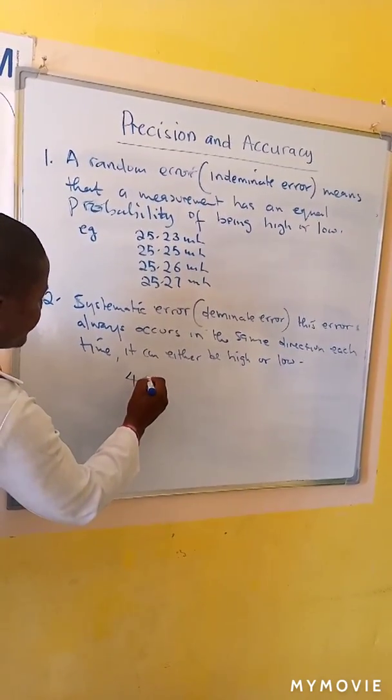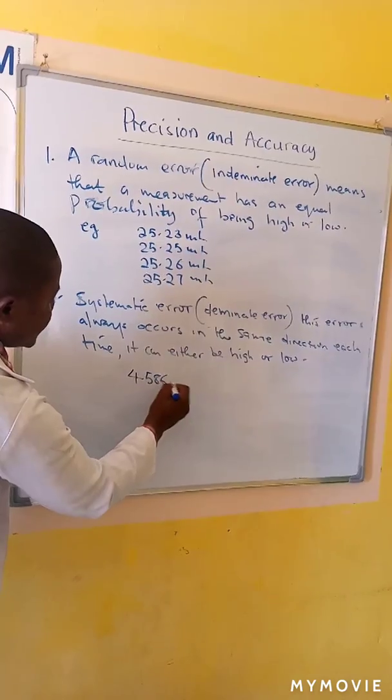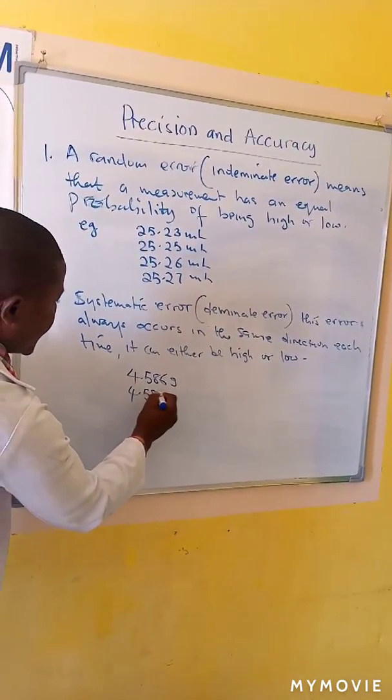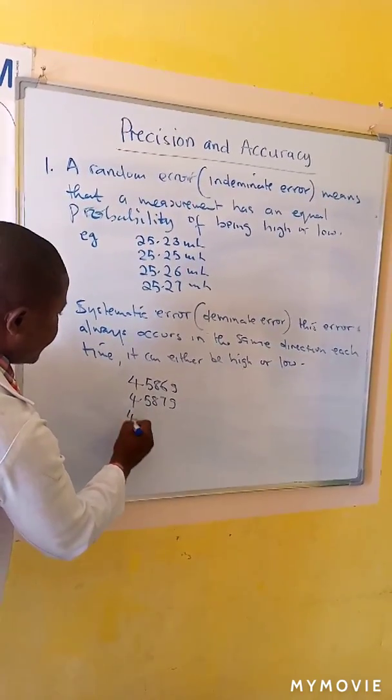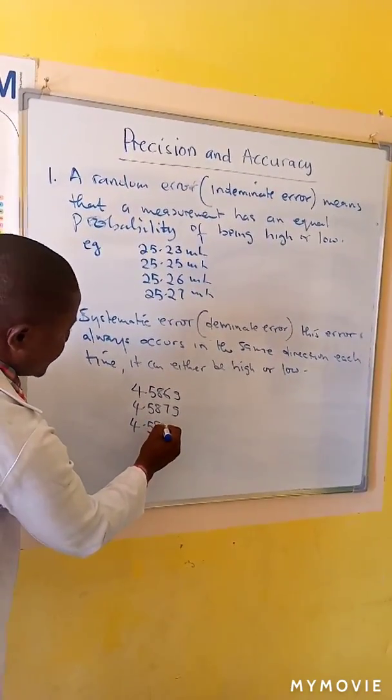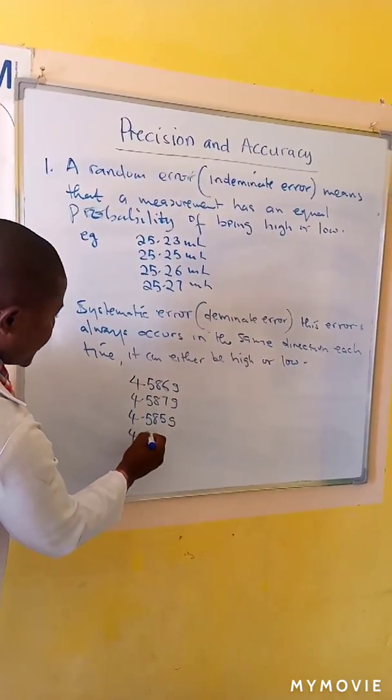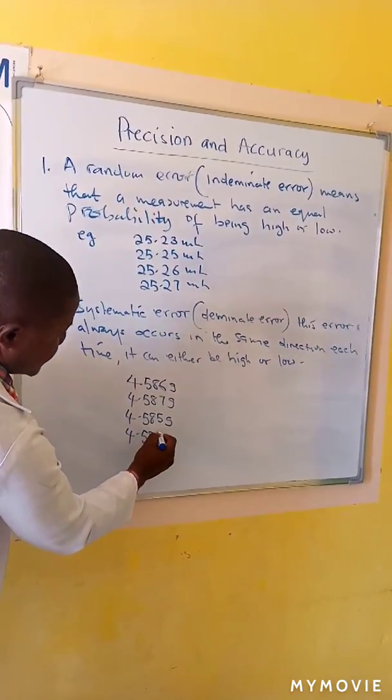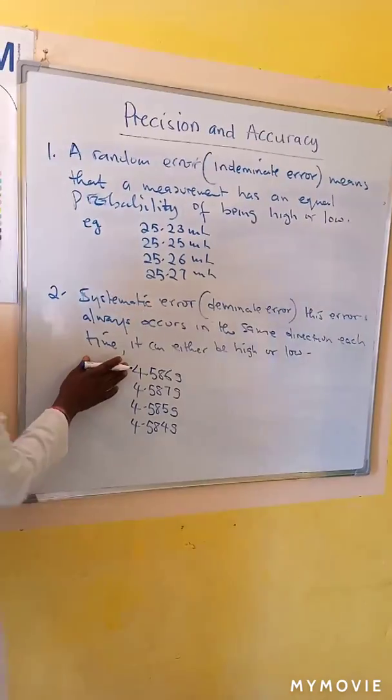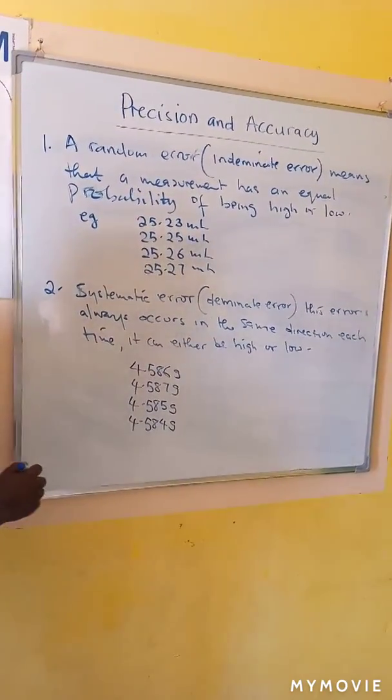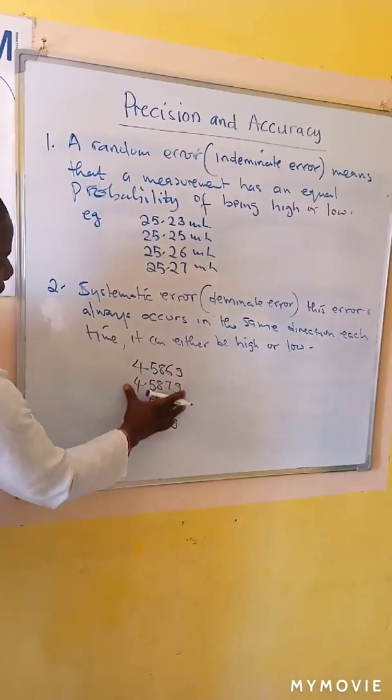And you have the mass of 4.586 grams, 4.587 grams, 4.585 grams, 4.584 grams. So these are precise measurements or the weights are precise.